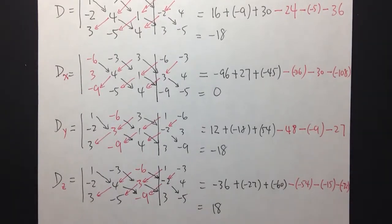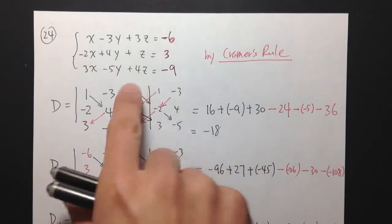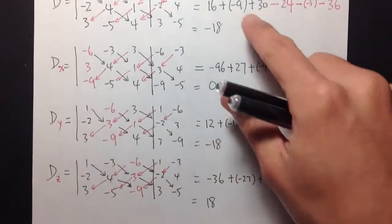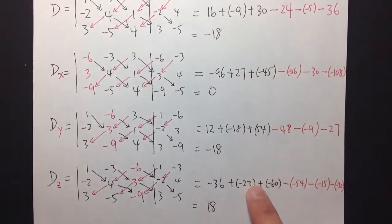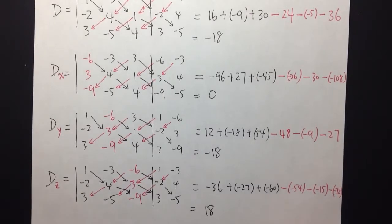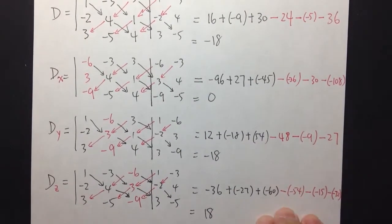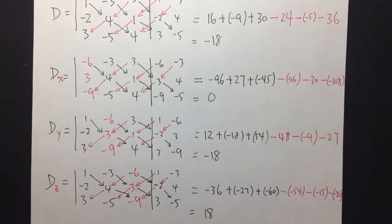Now we're going to continue on how to find the x value, y value, and z values of the original system of equations. We got our determinants - it's a long process, I know. The key for solving a 3x3 system of equations, regardless of which method you're doing, is to be organized and be patient. That's the key to success for these equations.